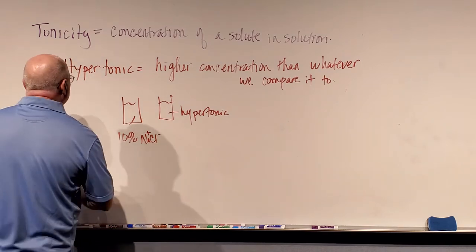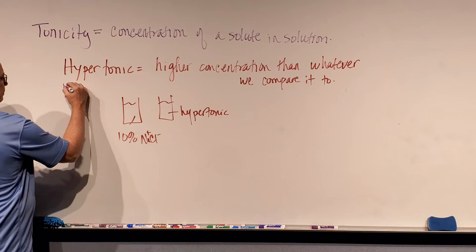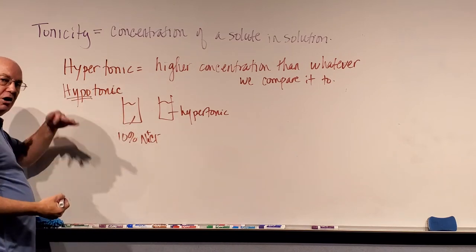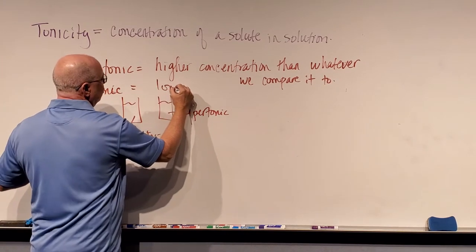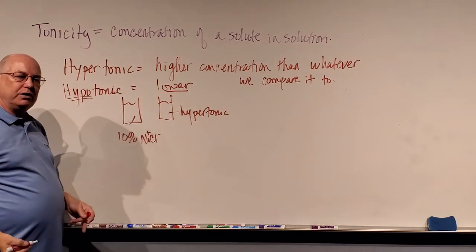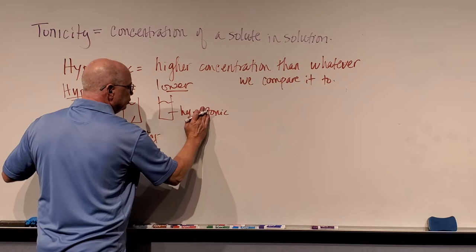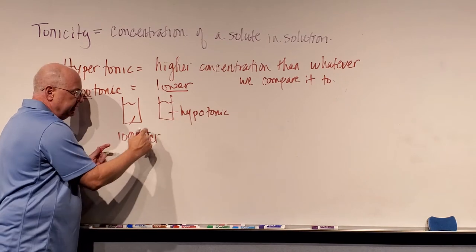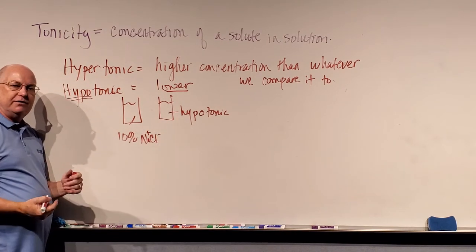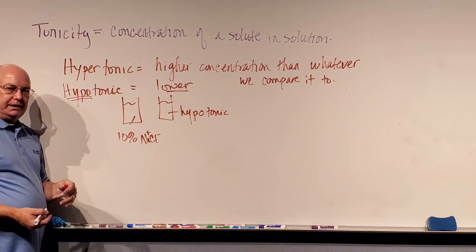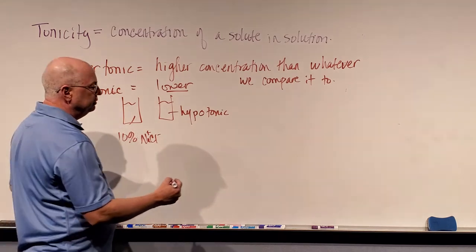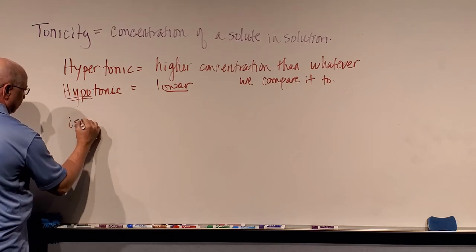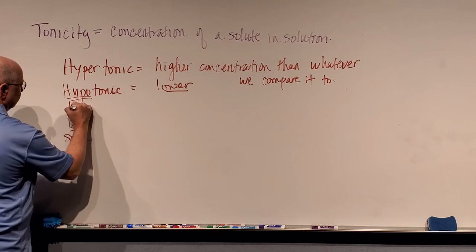Hypotonic — hypo means below or under — so hypotonic means a lower concentration than whatever we're comparing it to. If a solution is hypotonic to a 10% sodium chloride solution, the concentration of salt in that solution is less than 10%: 9, 8, 7, 6, 5, whatever — it would be hypotonic.